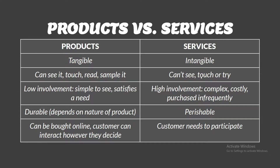For a product you can see it, touch it, read it, and sample it. For a service you cannot. A product is low involvement — simple to see and satisfies a need quickly, like buying and drinking a Coca-Cola. But buying GT is high involvement — it's more complex, costly, and purchased infrequently, such as at the start of a year.